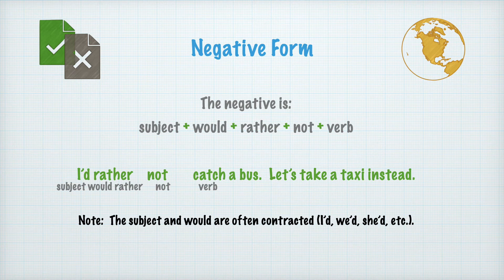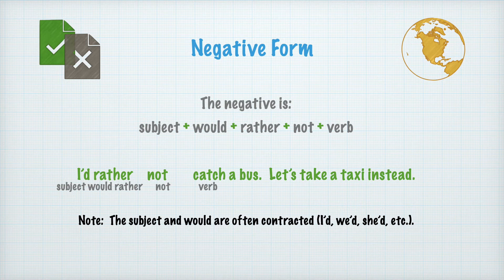Negative form. Forma negativa. The negative is: Subject plus 'would' plus 'rather' plus 'not' plus verb. La forma negativa es: Sujeto más 'would' más 'rather' más 'not' más verbo. I'd rather not catch a bus. Let's take a taxi instead. Preferiría no tomar un autobús. Hay que tomar un taxi mejor.